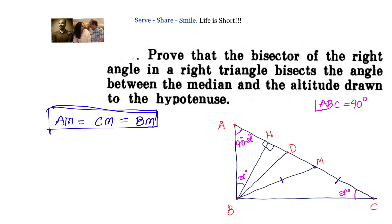Now in triangle BMC, we have BM equals CM, so the base angles are equal. That means angle BCM is also x degrees.